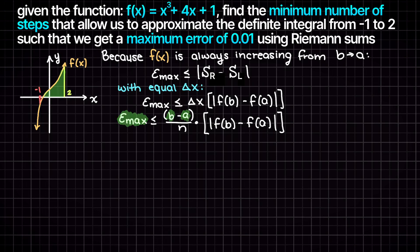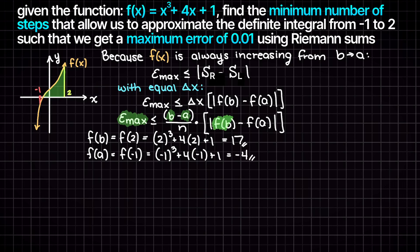Our f(b) and f(a) can both easily be found through plugging in the inputs of our lower and upper integral bounds to the original function. This results in 17 and -4 respectively as you can see here. Lastly, our n term is our unknown and our desired variable.